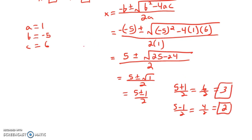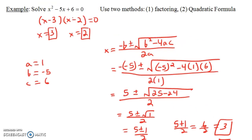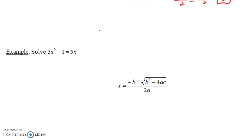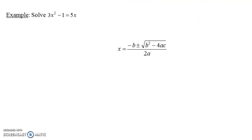Notice we got the same two answers. Which technique looked easier? Factoring involves much less work, so if you can factor a quadratic equation, that's really the way to go. But sometimes you can't factor the quadratic equation without getting a bunch of square roots, and in those cases you're forced to use the quadratic formula. The next example is one like that.